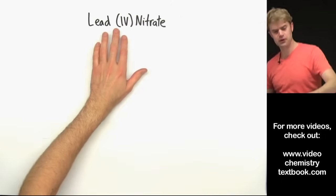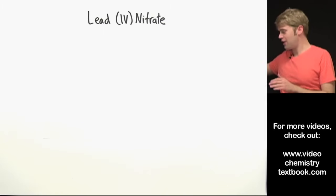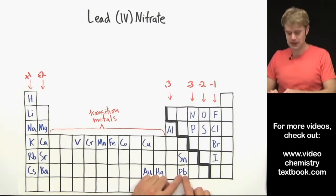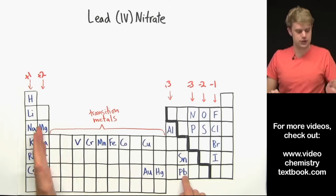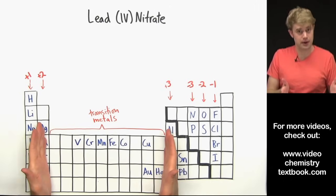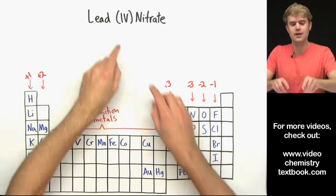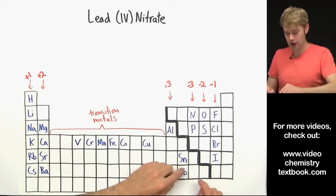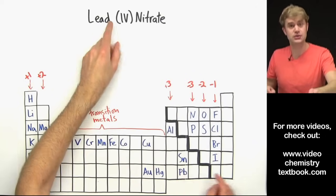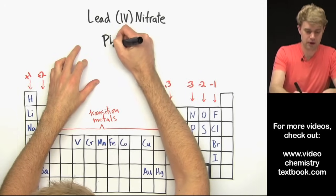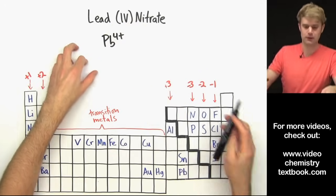Now to write the formula for lead 4 nitrate we'll figure out the charge of both of these ions. Lead, Pb here, isn't technically a transition metal but lead is like the transition metals because it's able to make multiple ions with different charges. So that's why we use the Roman numerals anyway to show what charge lead has in this compound. So we've got lead 4, Pb 4 plus and then we've got nitrate.